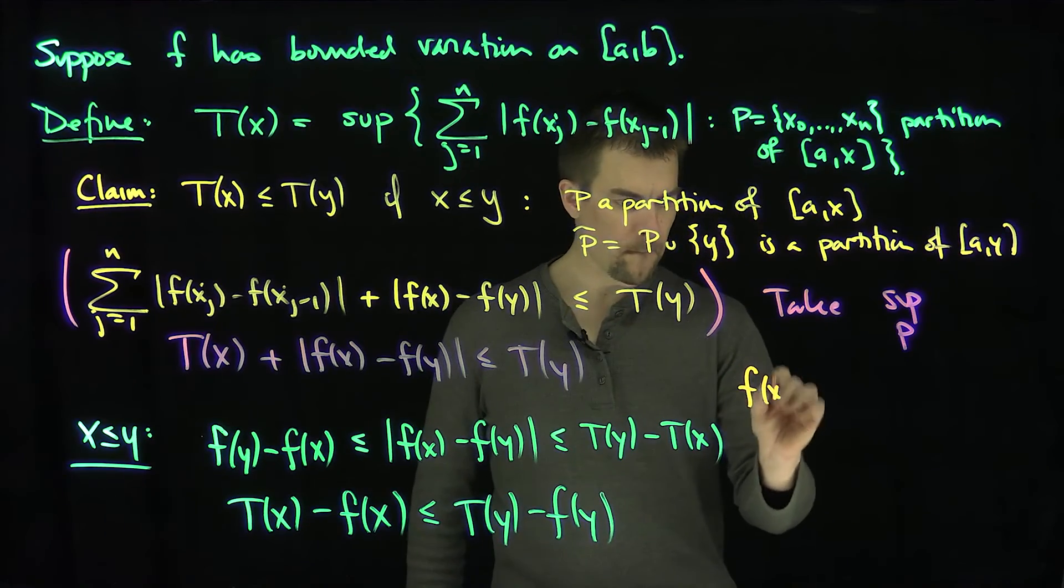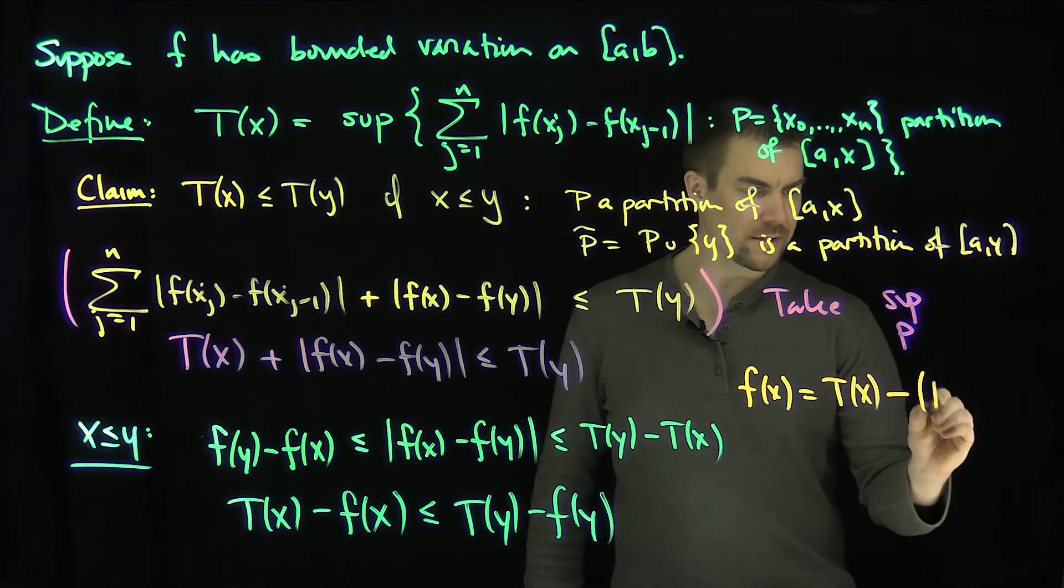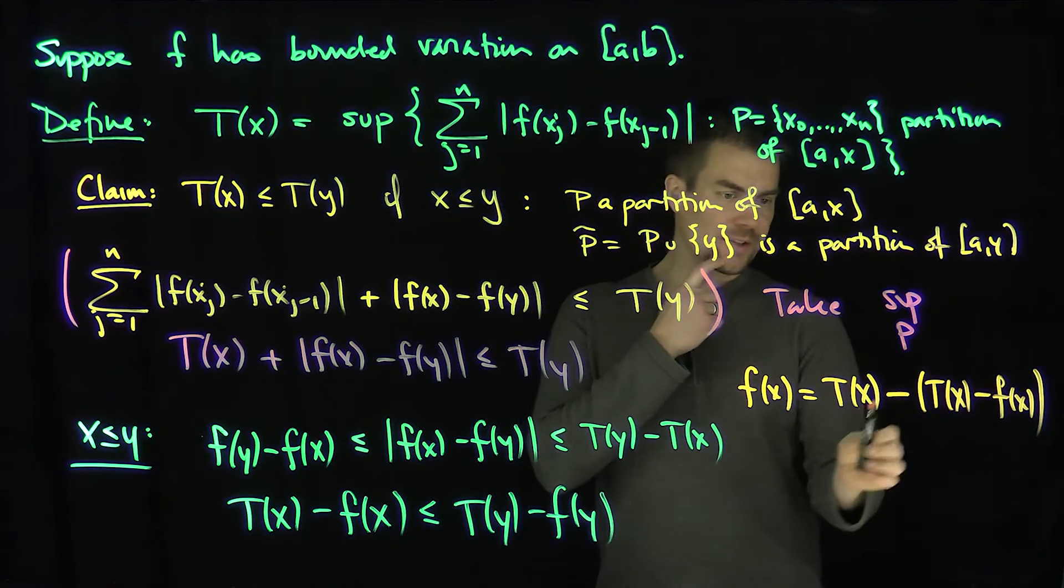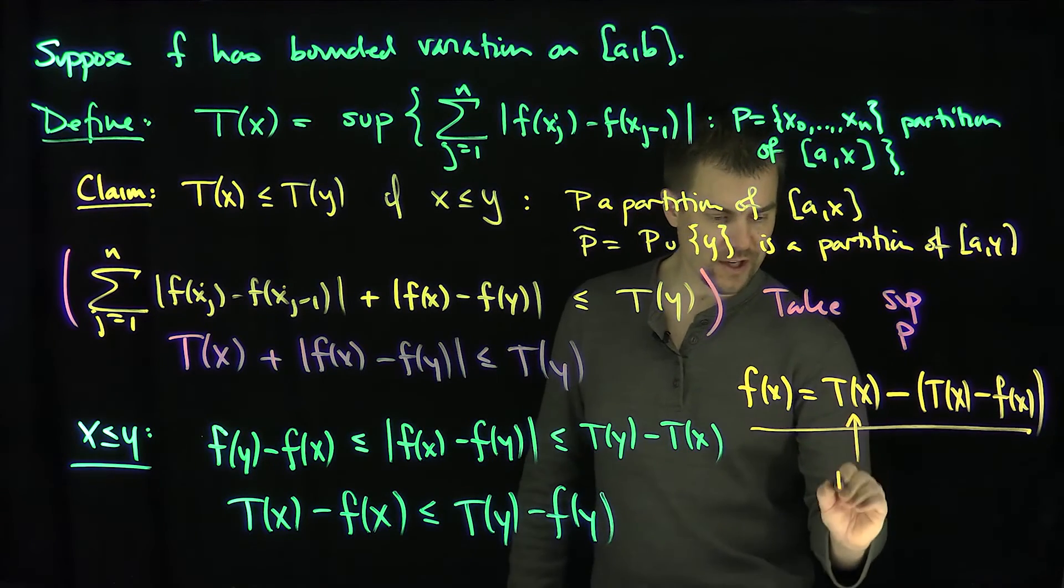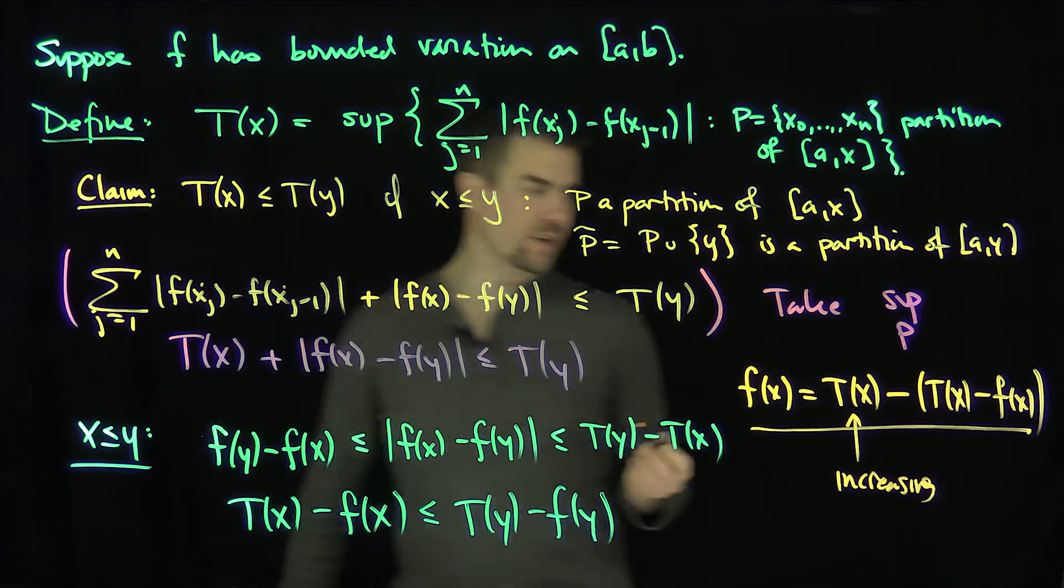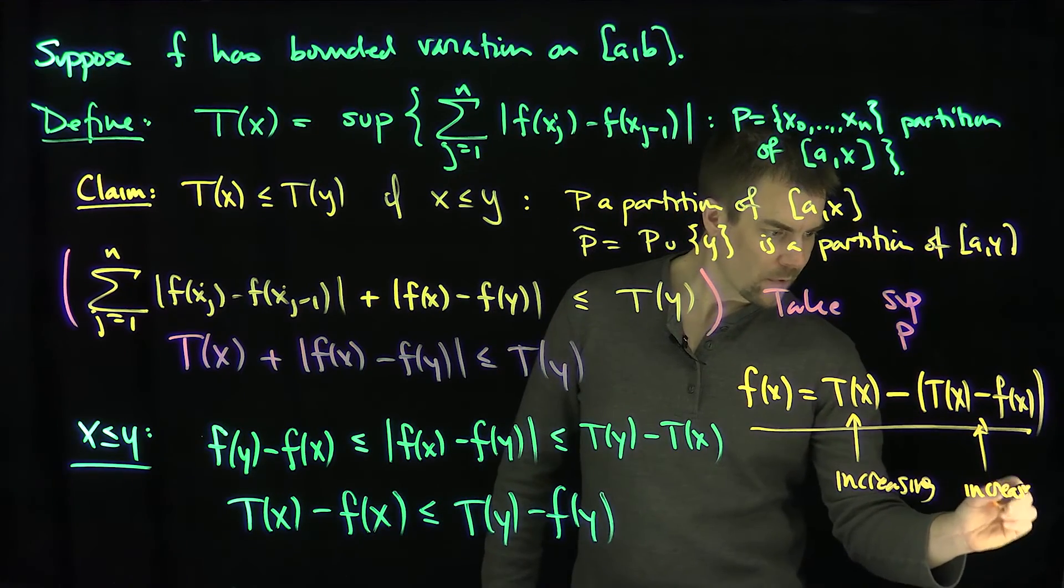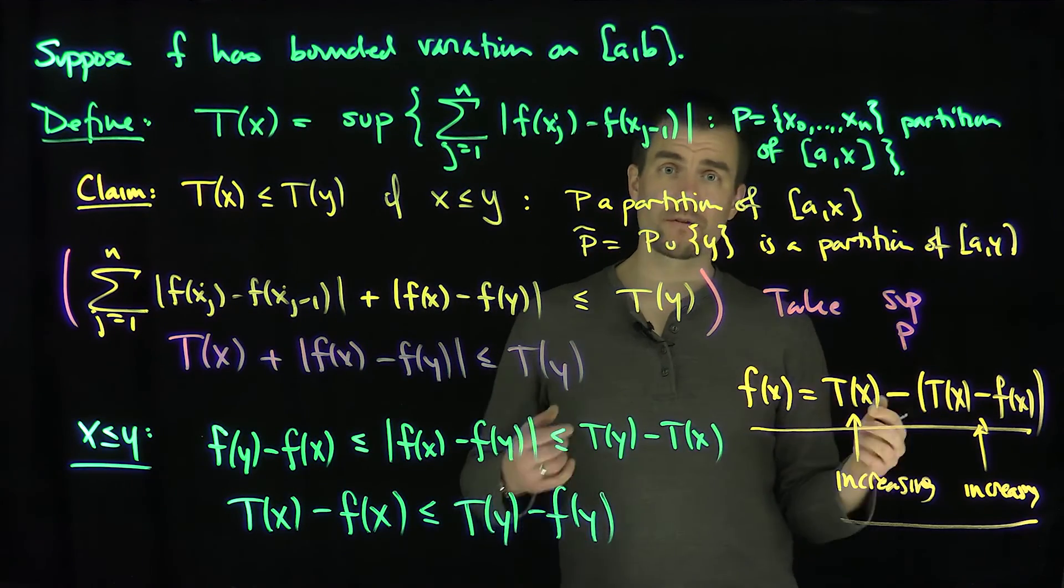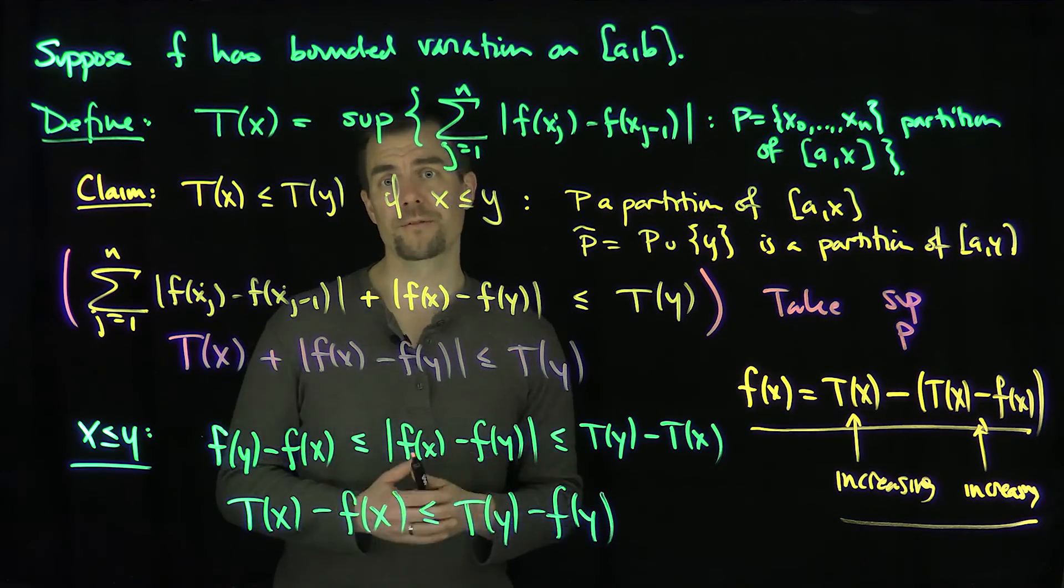So our function F of x is T of x minus (T of x minus F of x). And now we know that T of x is increasing by first principles, and this function is increasing by this inequality. So a function of bounded variation can be written as its total variation minus its total variation minus itself. Both those functions are increasing, so any function of bounded variation is the difference of two increasing functions.